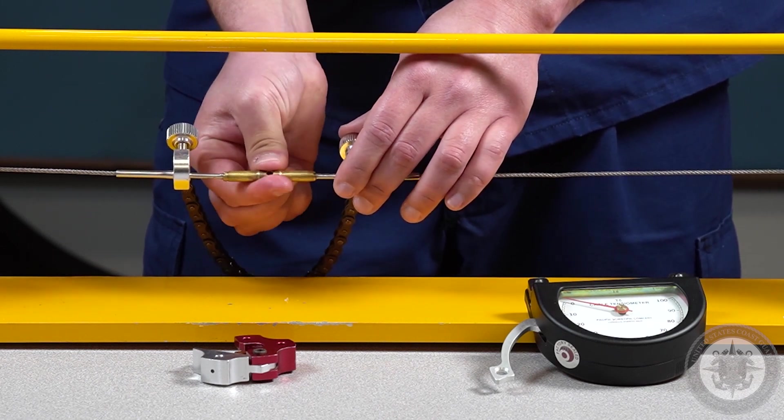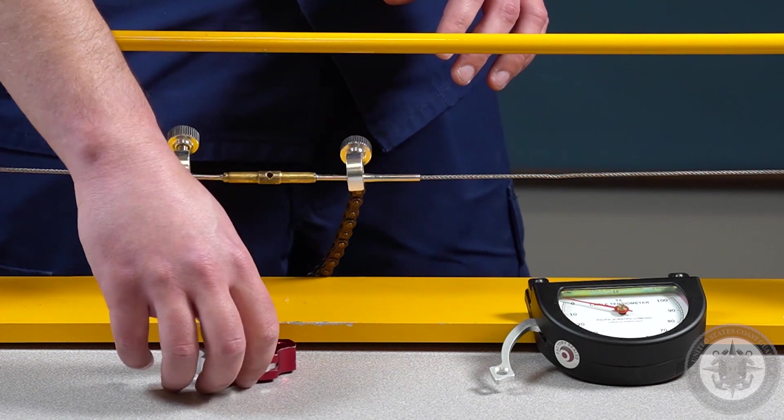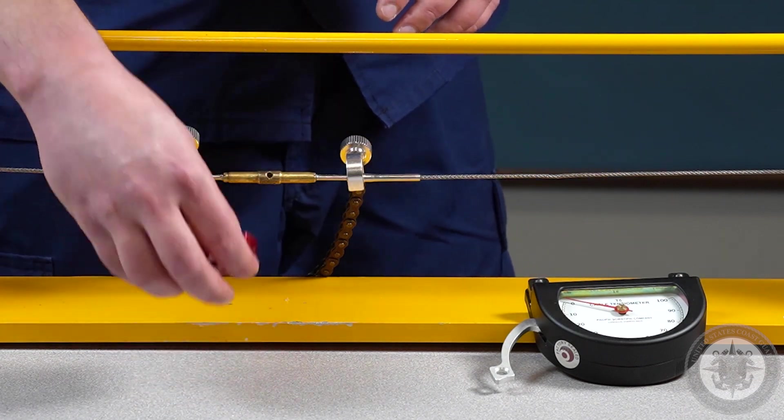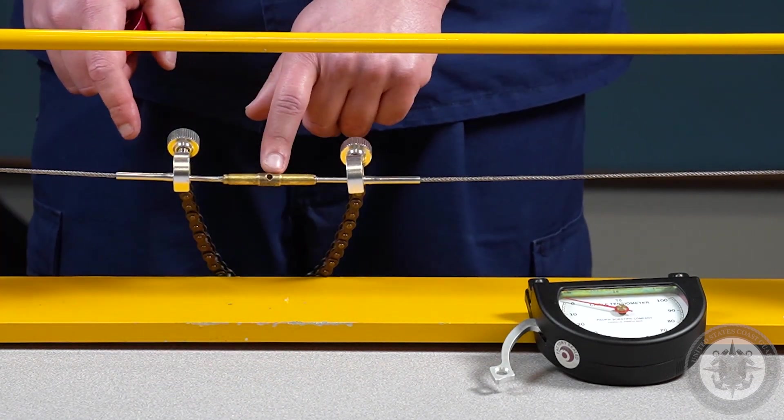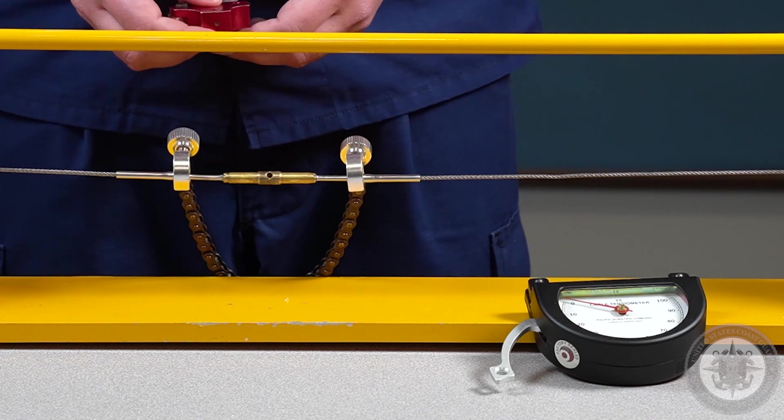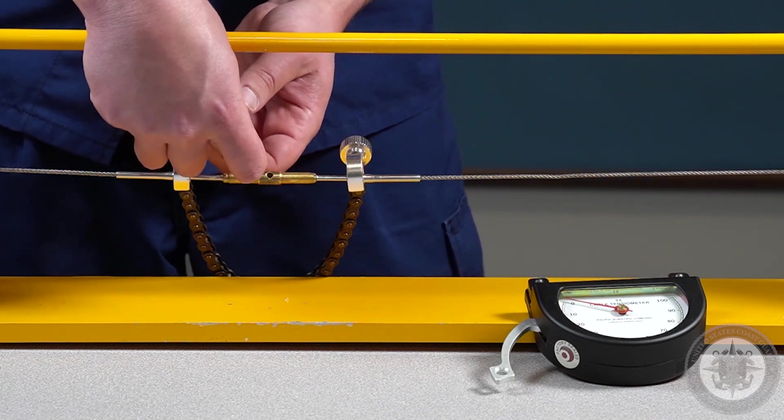All right, I have tension there. Now we're going to be using this chain tool. You could also hold the swaged fittings with wrenches and use a pin punch to twist the turnbuckle, but we have this tool so we're going to use it.